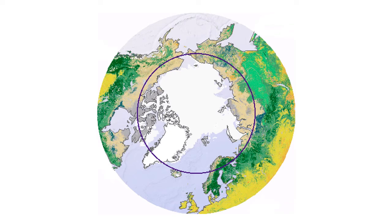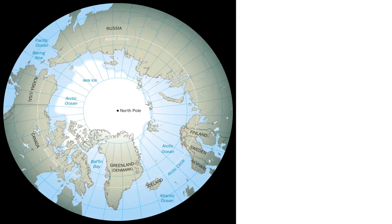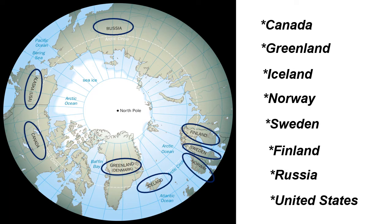The Arctic Circle passes through three continents: first, Europe; second, Asia; and third is North America. And the Arctic region covers part of eight countries: these are Canada, Greenland, Iceland, Norway, Sweden, Finland, Russia, and the United States.